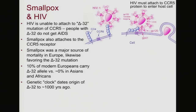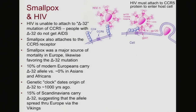Looking back at the origins of this particular mutation suggests that the Delta 32 allele appeared about a thousand years ago and it appeared in Europe. Today, 15 percent of Scandinavians carry the Delta 32 — higher than any other human group in the world — suggesting that the Delta 32 allele actually originated in Scandinavia.